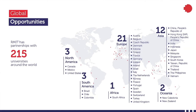RMIT as a university has a huge range of global opportunities you can tap into as part of our program. There are 215 universities around the world in the network. The program doesn't engage with all of those, but you are able to do internships and exchange programs with key universities in Asia and Europe with whom we have very close program-related relationships, with exchange programs for both staff and students.